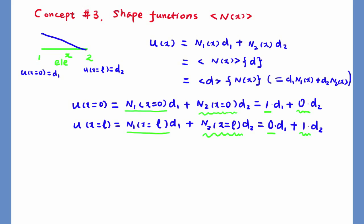Shape function 1 equals 1 at node number 1, 0 at node number 2. Shape function number 2, N2(x) equals 0 at node 1, and 1 at node number 2.